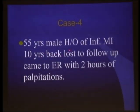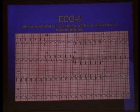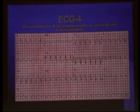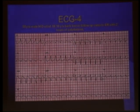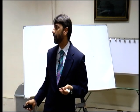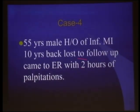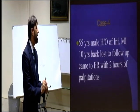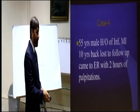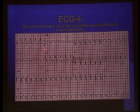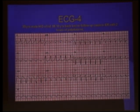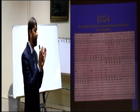55-year-old male, history of inferior MI 10 years back, lost to follow-up, came to ER with 2 hours of palpitation. Again — a stable patient — do not think there is nothing wrong. ECG is mandatory. This patient can also come to your OPD with palpitation. Background: prior inferior MI. Check hemodynamics. Sitting in your chair, do not write a prescription — take the pulse first. ECG done — rate was 150, stable, but broad complex tachycardia. Management changes completely based on that. This is how clinical judgment combined with ECG changes the course of management.